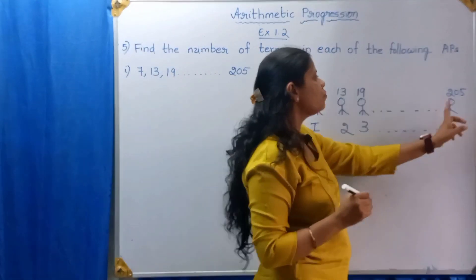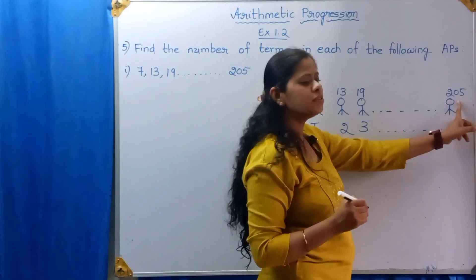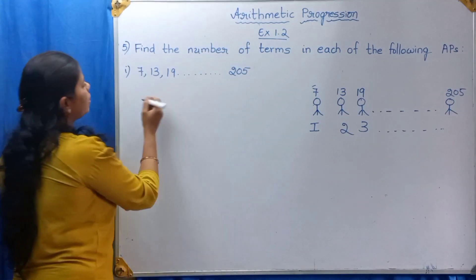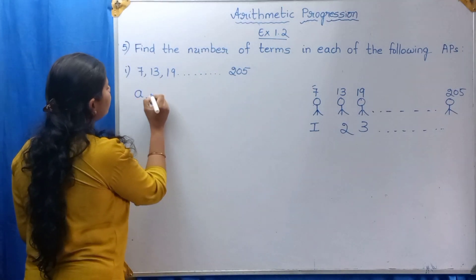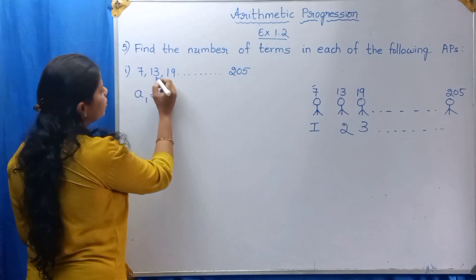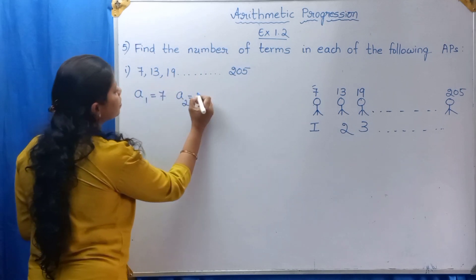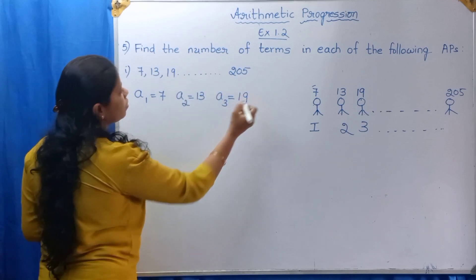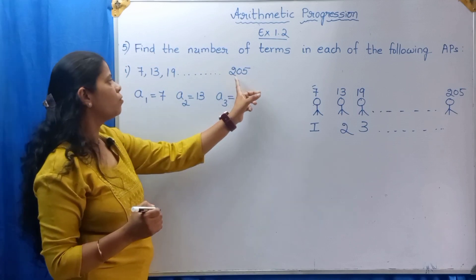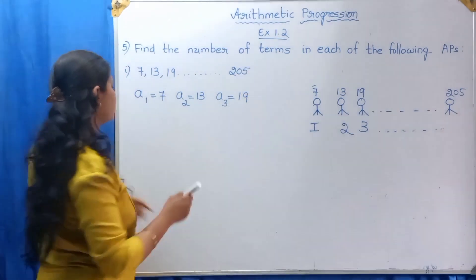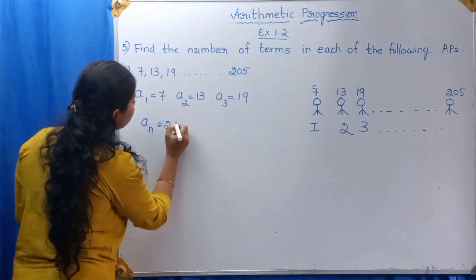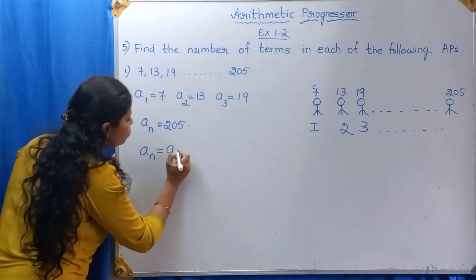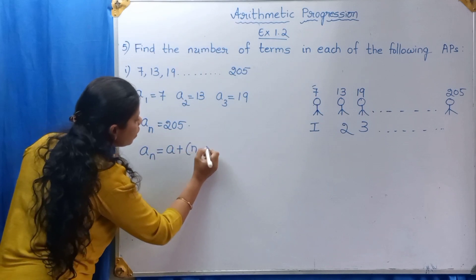Now we have to find out the place of the person who is holding 205. We know A1 is 7, A2 is 13, and A3 is 19. We don't know the number of the term for 205. That is, AN is equal to 205. Then apply the formula: AN is equal to A plus (N minus 1) into D.